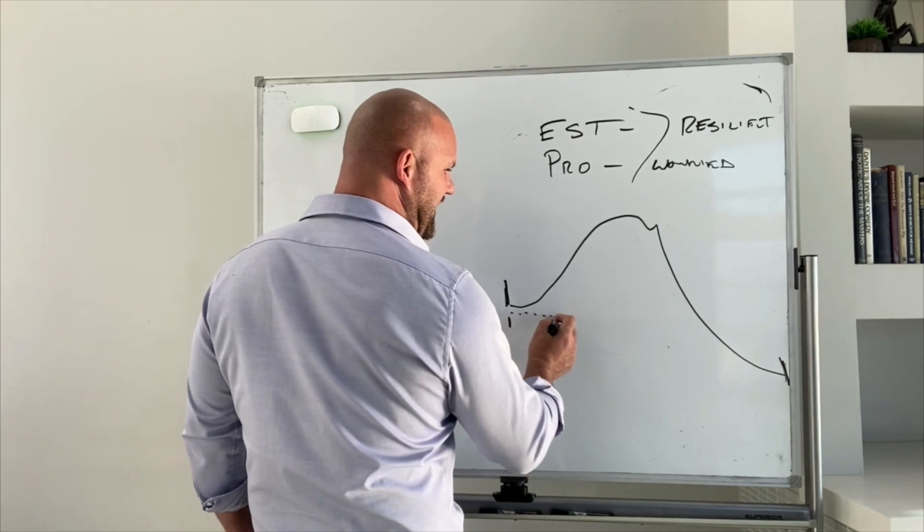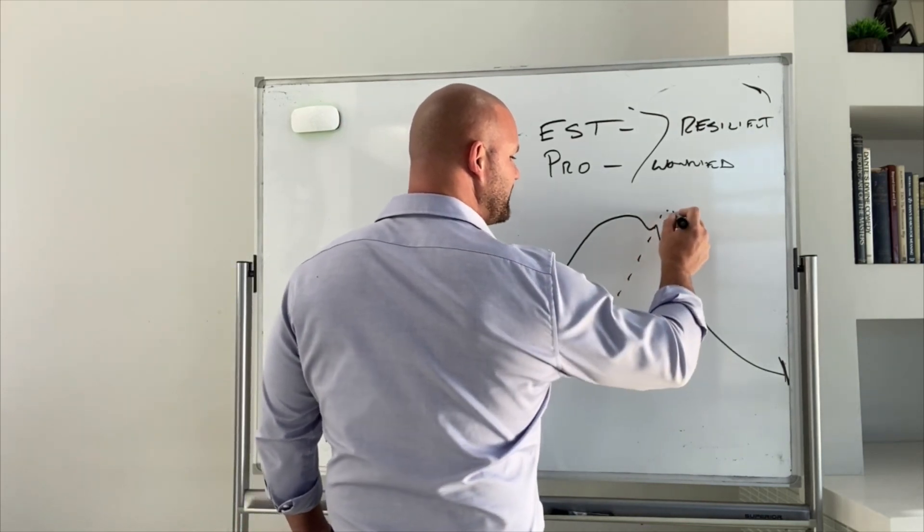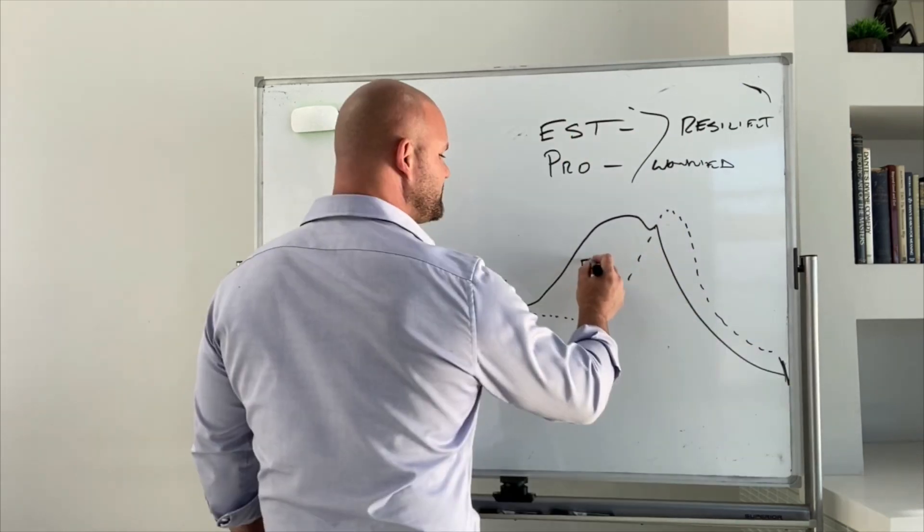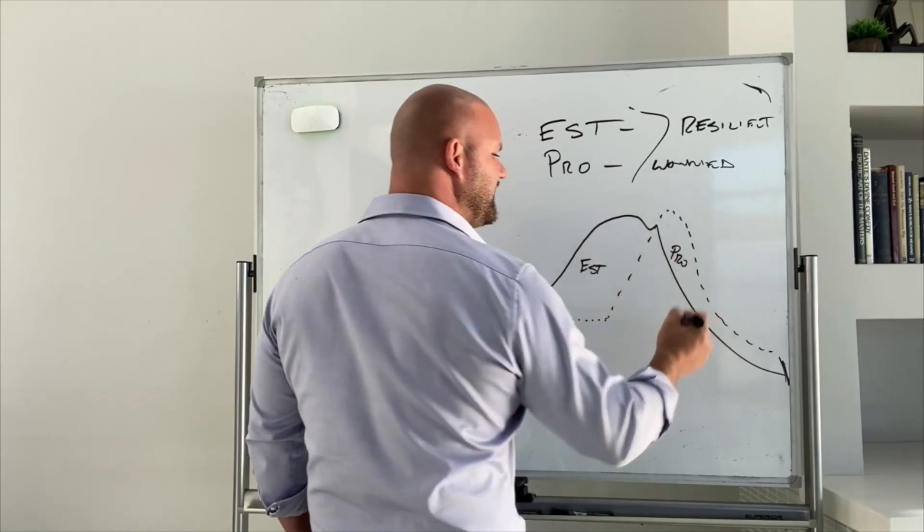Progesterone stays pretty flat-lined throughout the first two weeks and then it spikes right around ovulation and then comes down. Estrogen dominates in the first two weeks and progesterone dominates in the next two weeks.